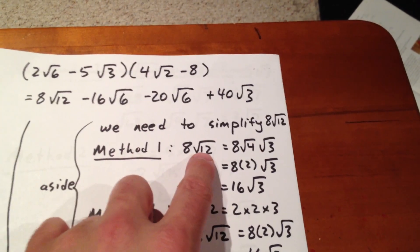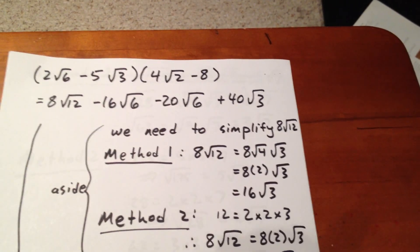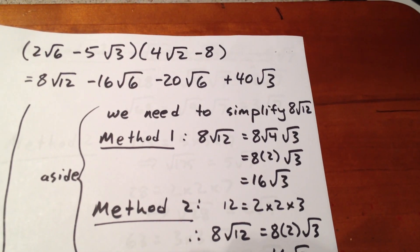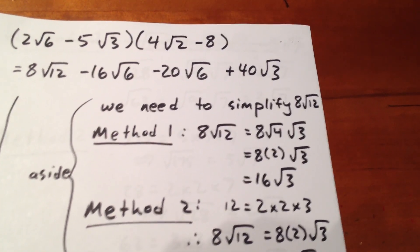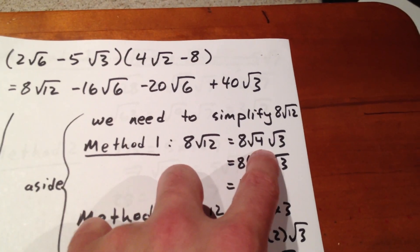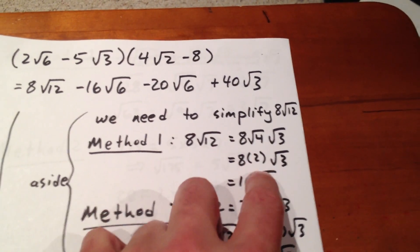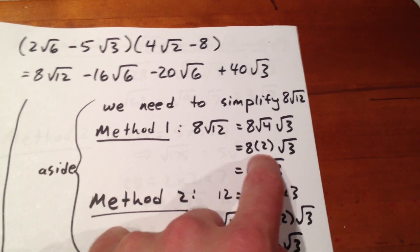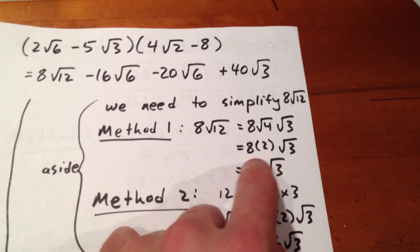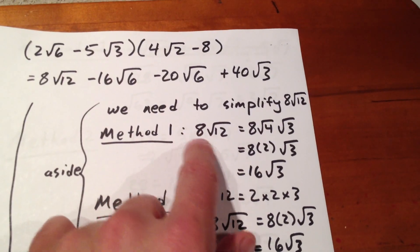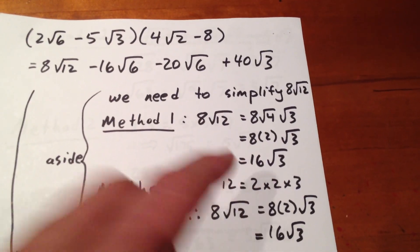Under Method 1, we see that 4 divides evenly into 12, which means we can factor out √4 from √12. We can express 8√12 as 8√4√3. Since √4 is 2, we can express 8√12 as 8 times 2 times √3. 8 times 2 is 16, so we get 16√3. Thus, 8√12 has been simplified to 16√3.